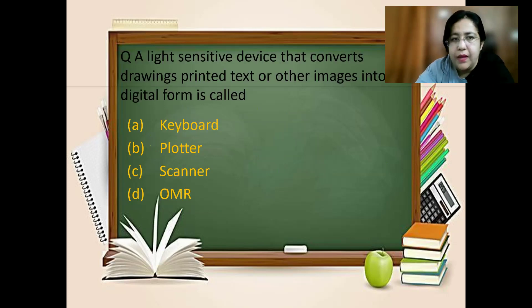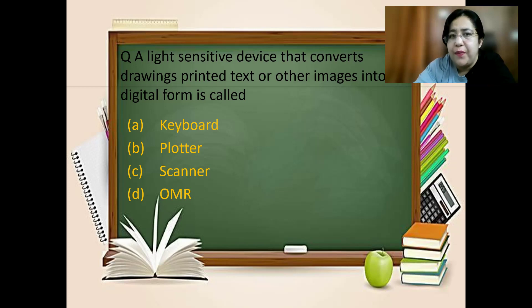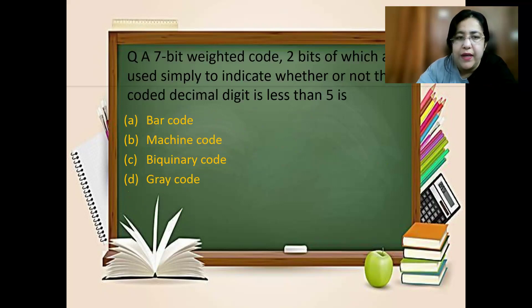Next question: a light-sensitive device that converts drawings, printed text, or other images into digital form is called what? This device takes data from paper and converts it into digital form. The answer is option number C, scanner. A scanner is used for that purpose.